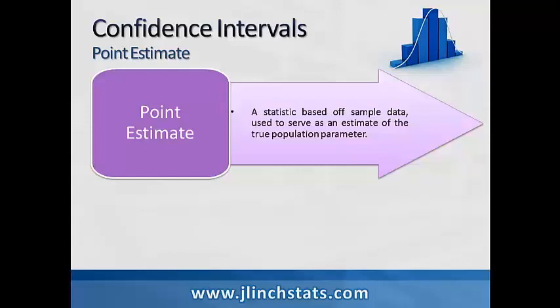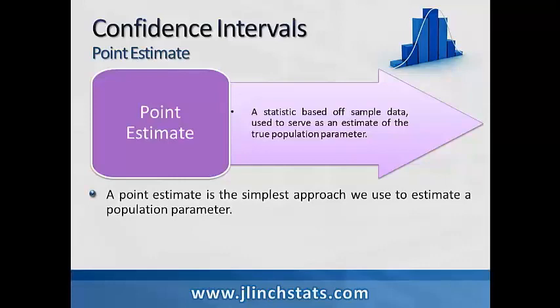A point estimate is our best guess of what a true population parameter is, based on the value of the statistic from sample data. For example, if I'm trying to estimate the mean mu of the population, I want to estimate the population parameter mu based on x-bar, my sample statistic. X-bar gives me what we call a point estimate. We could estimate other population parameters from sample statistics, but that one single value is called a point estimate — it is our best guess of the true population parameter. A point estimate is the simplest approach we use to estimate a population parameter.